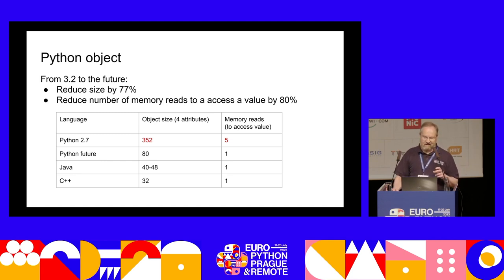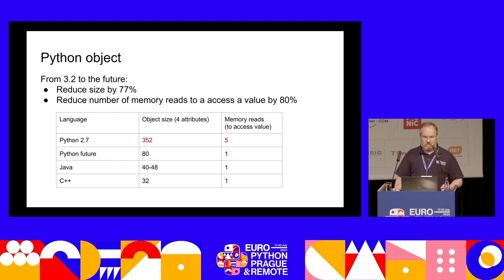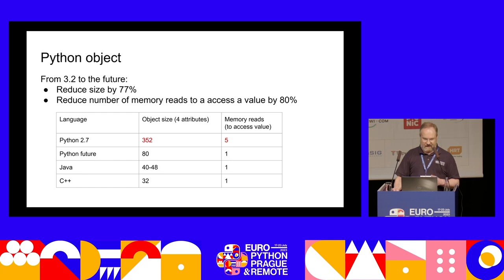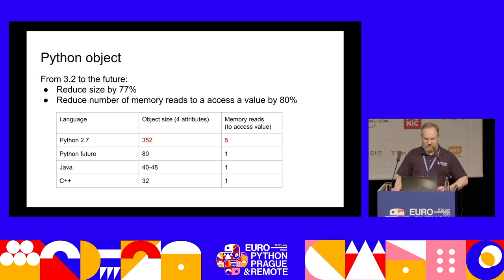There's a little cheating here: when I say one memory read, Java or C++ just requires that read, whereas Python needs some additional checks to confirm nothing has changed. With modern CPUs that can do several things at once, we're in the same order as Java and C++. Memory use is about double, but given the flexibility and power of Python, I think that's a reasonable price to pay.